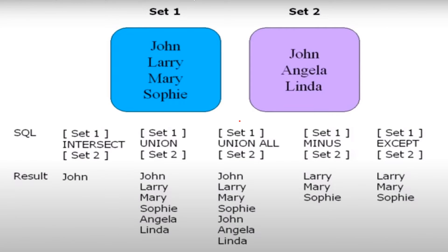Now I am gonna explain those operations with some examples. I have two result sets — set one is the first SELECT query result and set two is the second SELECT query result. If I use INTERSECT between these two SELECT statements, I get John, which is the common record in set one and set two. If I use UNION between these two SELECT statements, I get all the records of set one and set two: John, Larry, Mary, Sophie, Angela and Linda.